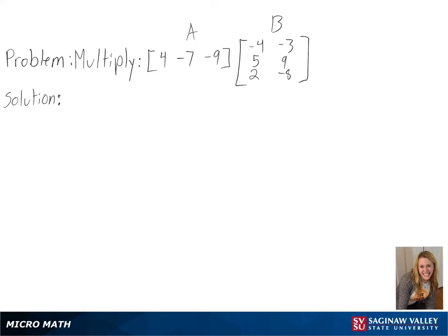Our problem is to multiply matrix A by matrix B. To be able to multiply matrices, the number of columns in the first matrix has to equal the number of rows in the second matrix. We can see here that this is the case since they both have 3.